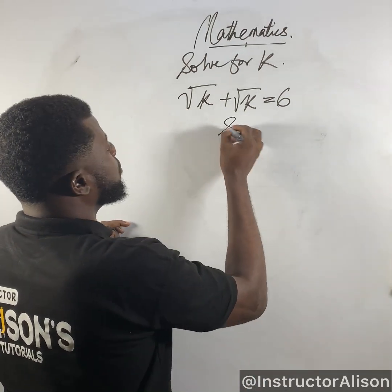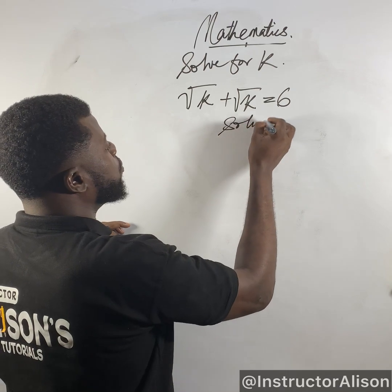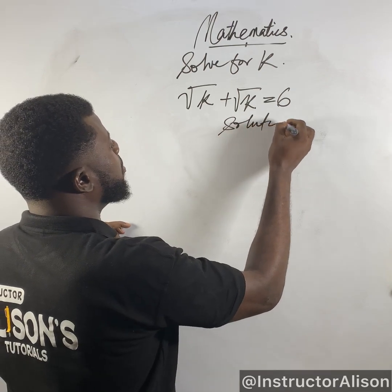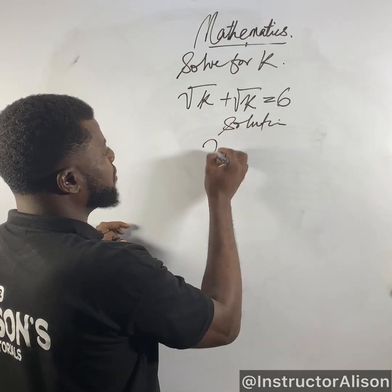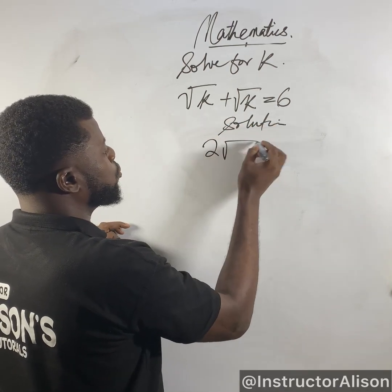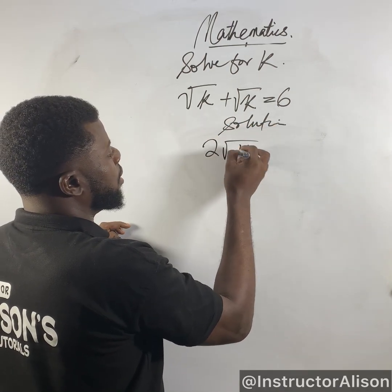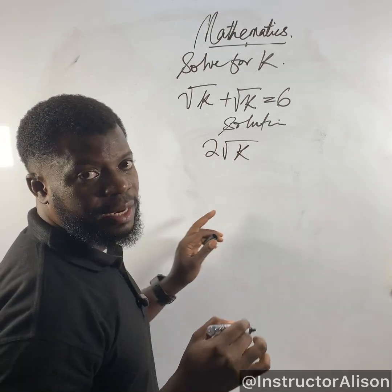So the first thing we want to do is to sum up root k plus root k. And that gives us 2 root k. I've explained that right now.